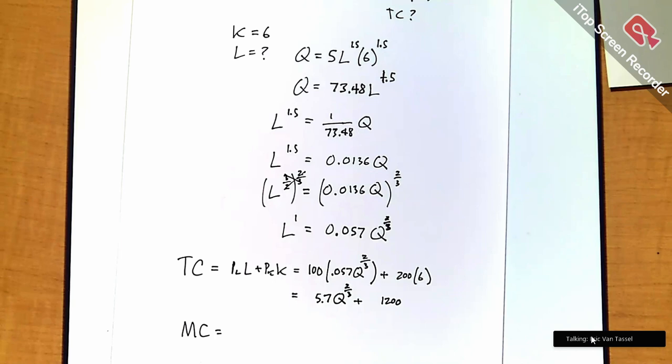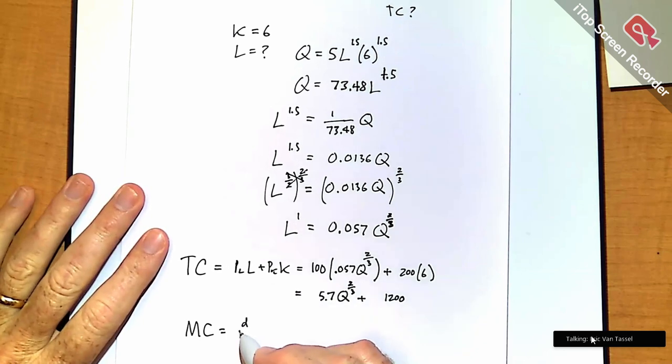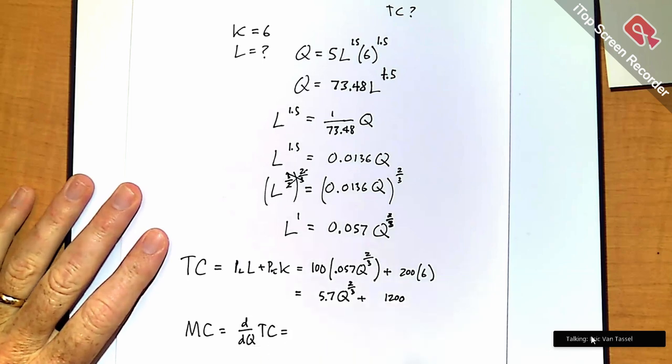So what do I do to get marginal cost? If you have the total cost function, marginal cost is just the derivative. So marginal cost is just the derivative of total cost with respect to Q.